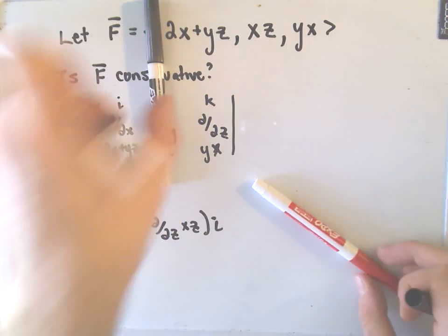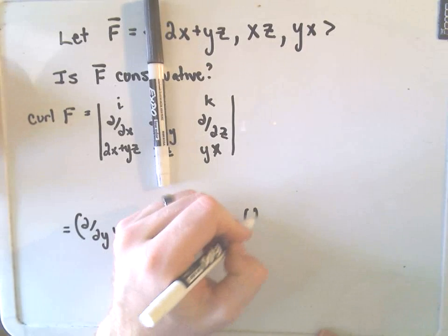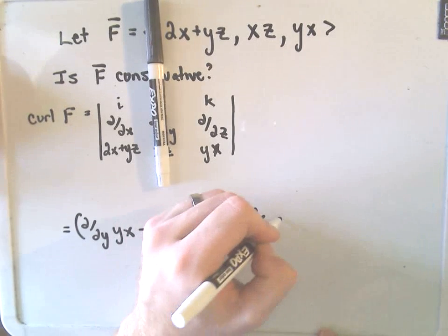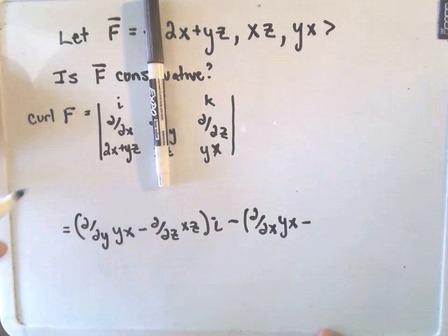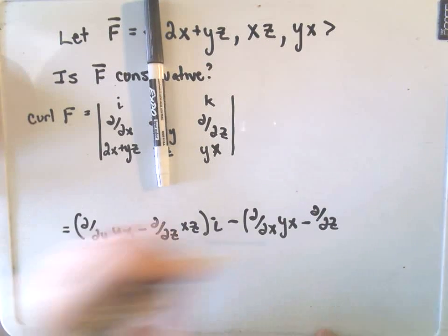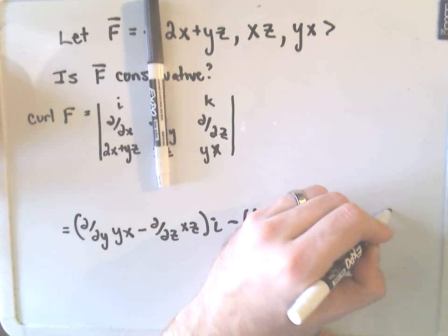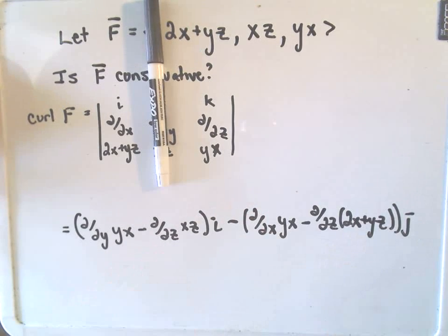Likewise, if we cover up the j column, we'll get minus the partial with respect to x of yx minus the partial with respect to z of the 2x plus yz. That'll be our j-component.